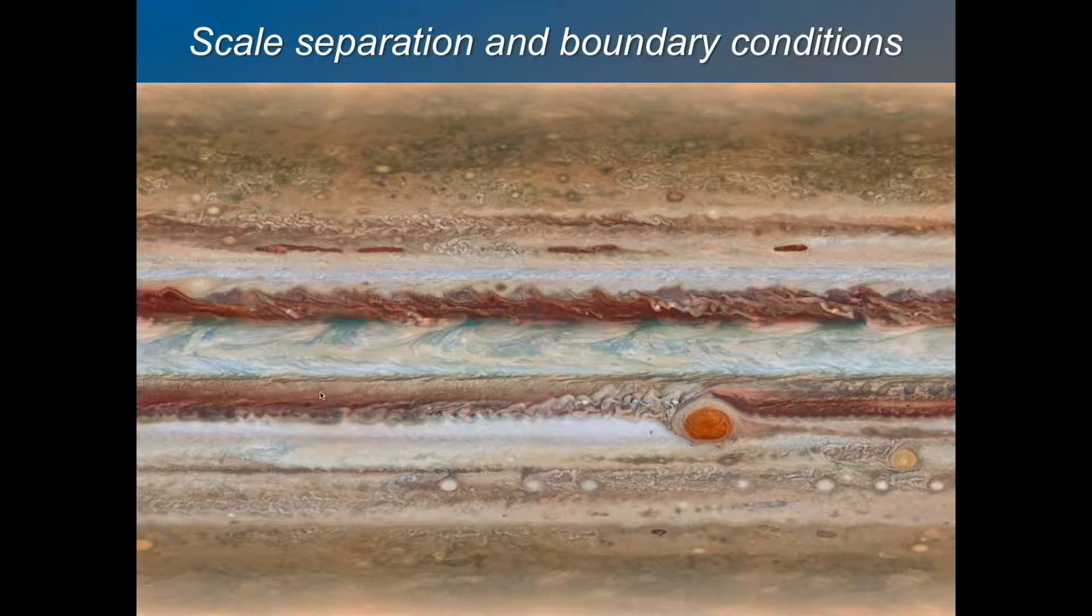We have these zonal jets, these small scale eddies interacting with the large scale flow. We even have this red spot, which is a beautiful example of a long-lived phenomenon. If you see this train of eddies upstream of the red spot, you can just imagine them feeding that long-lived low-frequency perturbation and allowing it to maintain itself against dissipation.